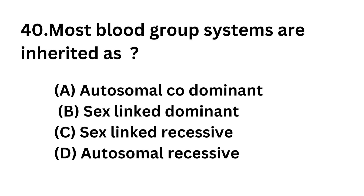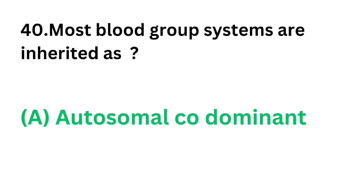Question No. 40. Most blood group systems are inherited as: Option A: Autosomal co-dominant. Option B: Sex-linked dominant. Option C: Sex-linked recessive. Option D: Autosomal recessive. The correct answer is Option A — autosomal co-dominant. Most blood group systems are inherited as autosomal co-dominant.